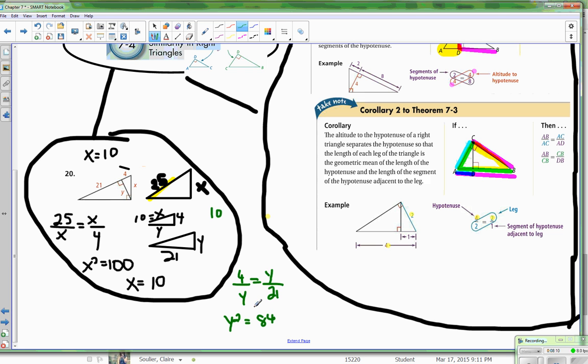Then we take the square root and we get Y is equal to square root of 84. And then we want to simplify square root of 84, so I know that is 2, because 4 lives inside it, times the square root of 21.